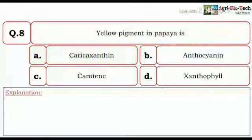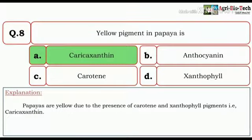Come to the next question. Yellow pigment in papaya is Caricaxanthin, Anthocyanin, Carotene, and Xanthophyll. So here the correct answer would be Caricaxanthin. Papayas are yellow due to the presence of carotene and xanthophyll pigments that is Caricaxanthin.